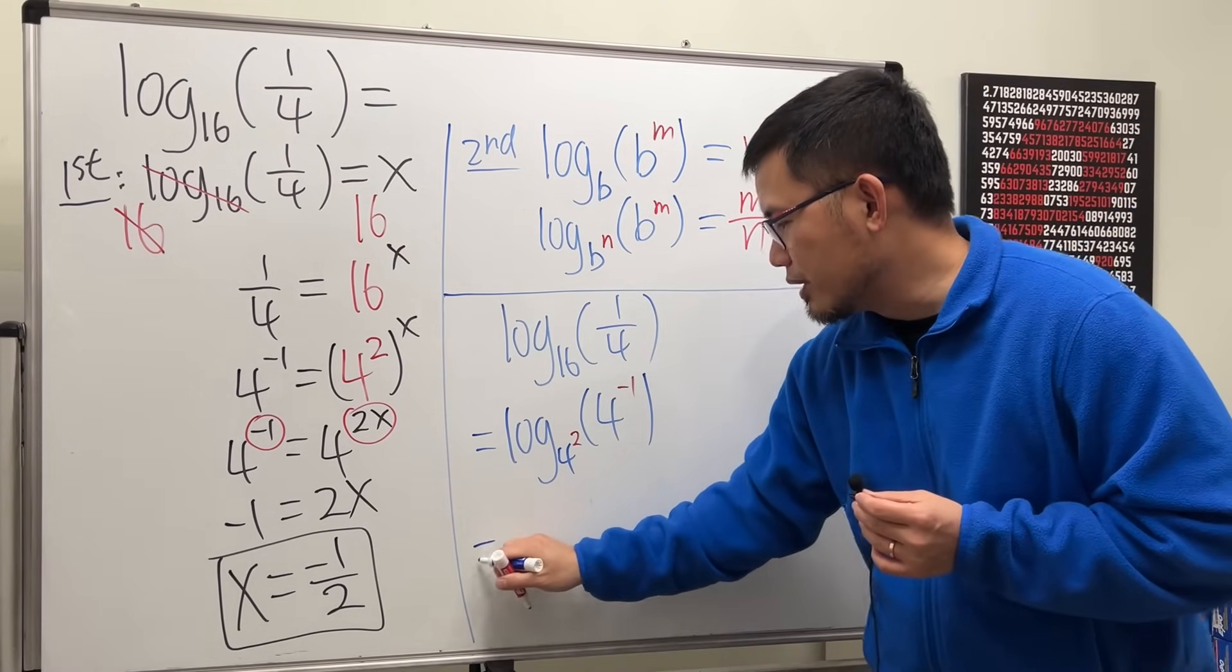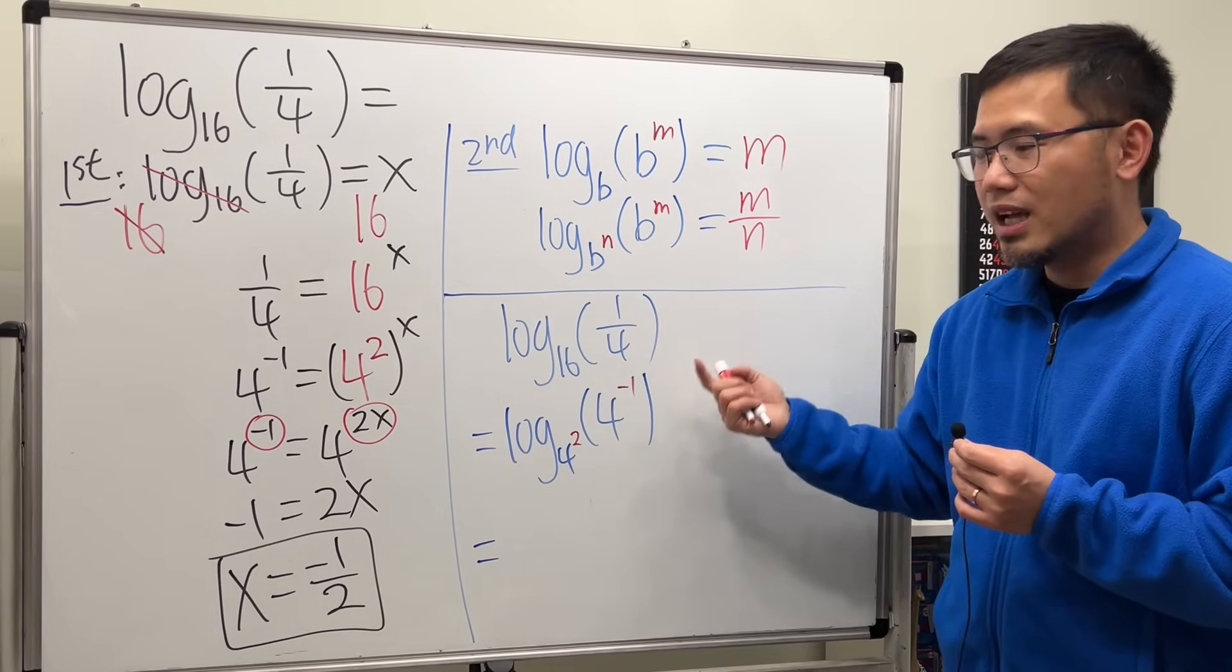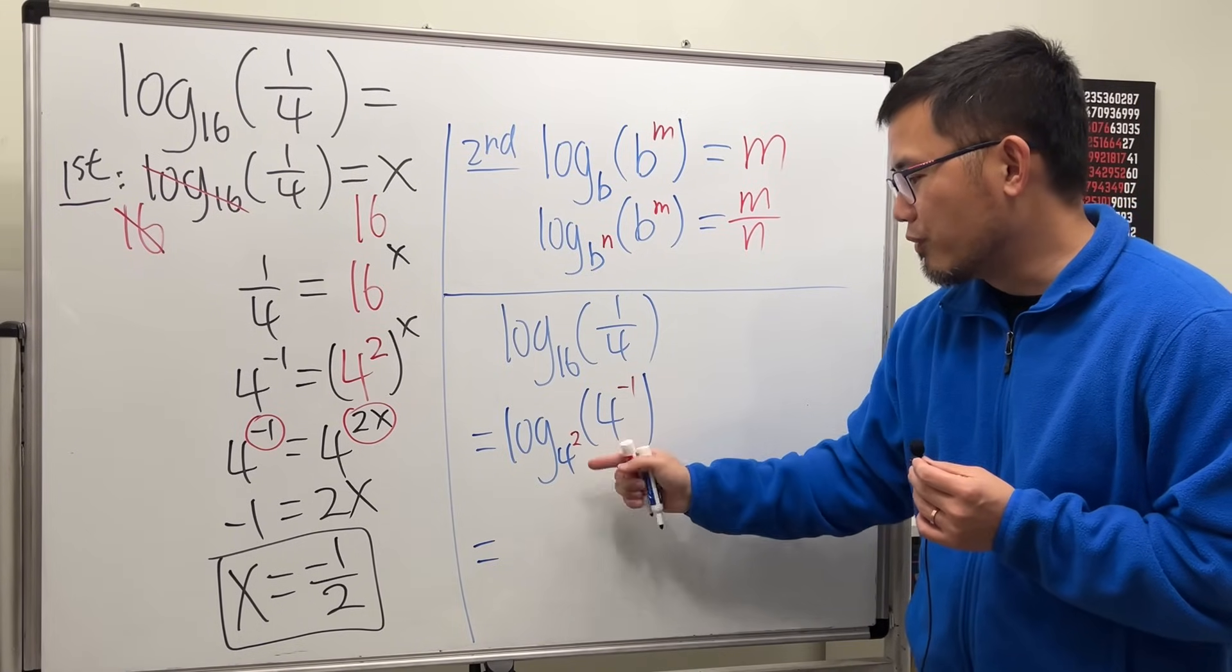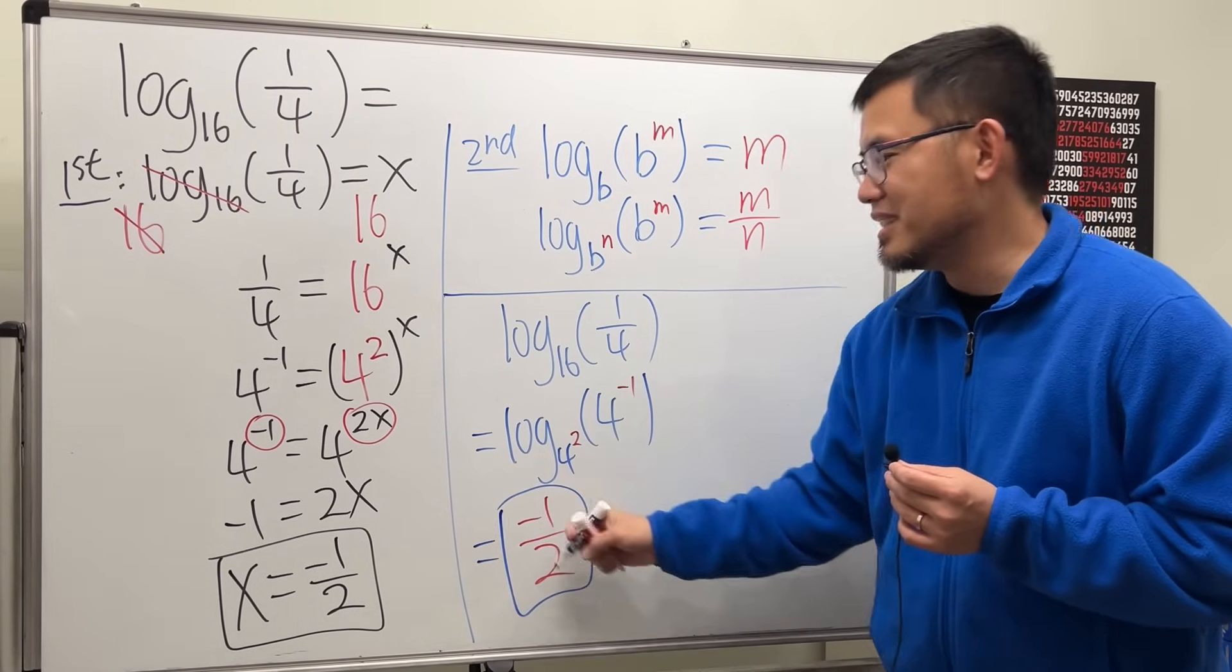Now as you can see, by using this formula, we get what, it was m over n, right? Now we just have negative 1 over 2. And that is the answer.